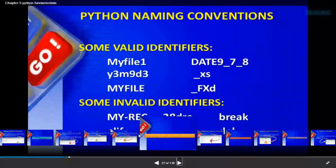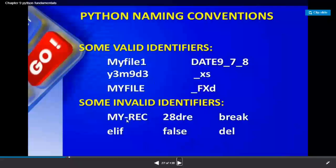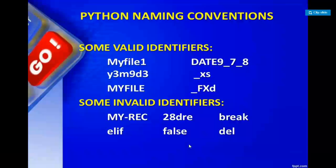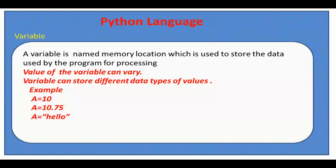Some invalid identifiers: 'my#rack' is invalid because a special character other than underscore is used. 'Two_var' is invalid because it starts with a digit - identifiers cannot start with a digit. 'Break' is a keyword so you cannot use it as an identifier. 'elif', 'False', and 'del' are also keywords so they cannot be used as identifiers. This is how we identify which identifiers are valid and which are invalid.